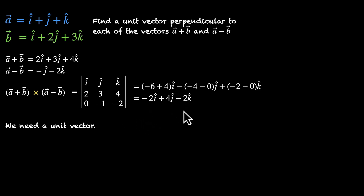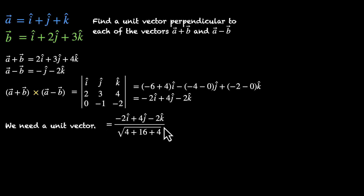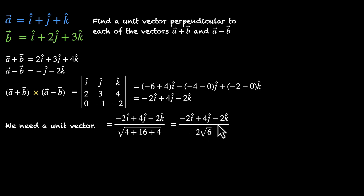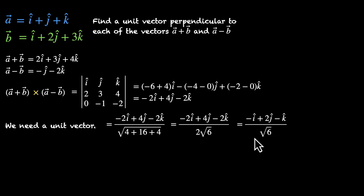Dividing minus 2i-cap plus 4j-cap minus 2k-cap by its magnitude: that's the square root of 2² plus 4² plus 2², which is the square root of 4 plus 16 plus 4, equal to the square root of 24, which is 2 root 6. So this is minus 2i plus 4j minus 2k divided by 2 root 6. Cancelling the 2, we get minus i-cap plus 2j-cap minus k-cap divided by root 6.